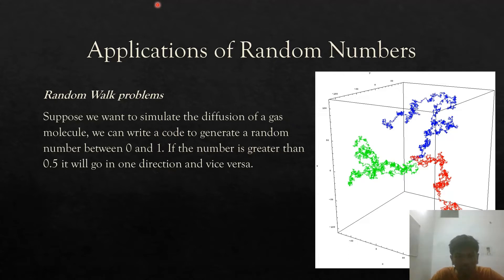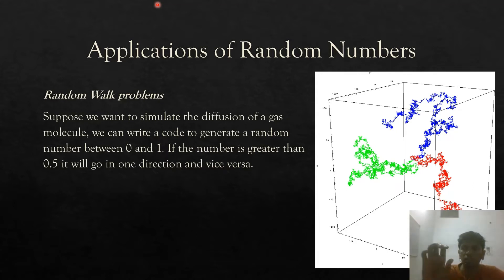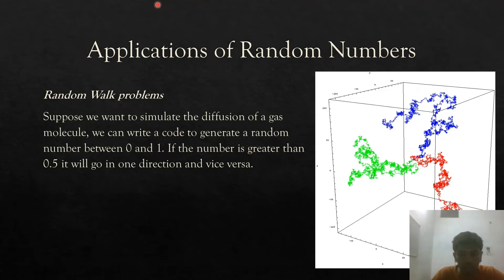Another application of random numbers in numerical simulations is random walk problems. For example, to simulate the motion of a gas particle in 1D or 2D, I can generate two random numbers — the distance r and the direction of travel from the initial path. This can be used to simulate Brownian motion or gas diffusion using computer simulations, and for that, random number generation is very important.